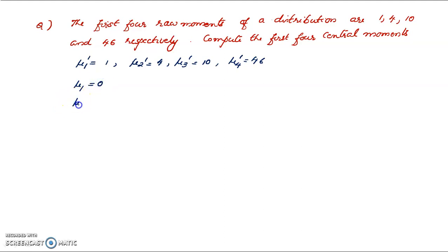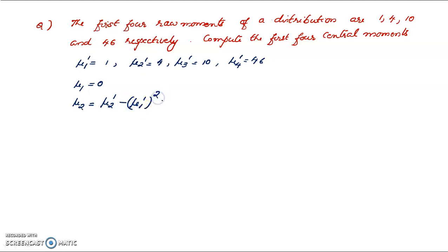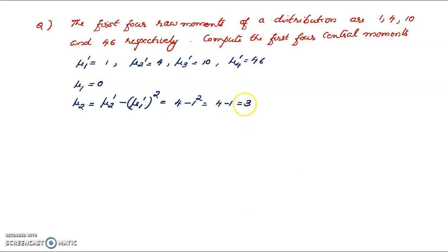For mu2, in terms of raw moments, mu2 is equal to mu2 dash minus mu1 dash the whole square, which is equal to 4 minus 1 squared, that is 4 minus 1, which is equal to 3.